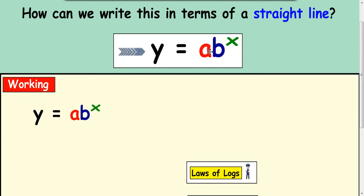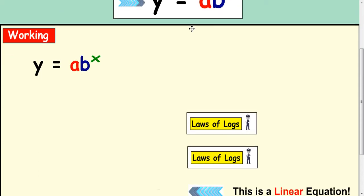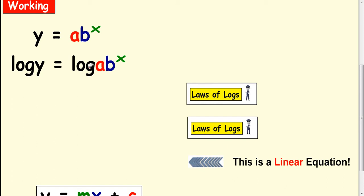So let's see how this rearranges to form the equation of a straight line format. We start off the same way, taking logs of both sides. Again, split the log b to the x into a plus.